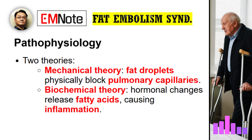The biochemical theory is more complex. It proposes that the initial trauma triggers hormonal changes and the release of free fatty acids and other substances like chylomicrons. These free fatty acids are actually toxic to the endothelial cells lining the blood vessels — they cause direct damage, inflammation, and increased vessel permeability. This leads to a widespread inflammatory cascade, potentially causing multiple organ dysfunction, ARDS in the lungs, cerebral edema, etc. These two theories aren't mutually exclusive; they likely work together, with mechanical obstruction triggering the biochemical response.